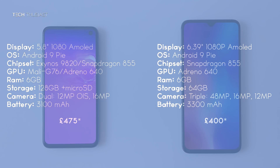So that is the end of this camera shootout. For daylight photos, it was very close, but I would say the Galaxy S10e had better color accuracy and was generally better overall. For the ultra-wide angle photos, again the Galaxy S10e is better, as you were able to capture a lot more than the Mi 9. For portrait photos, they were very similar, however not as good as the Pixel 3. For indoor photos and low light photos, the Galaxy S10e is the better of the two.